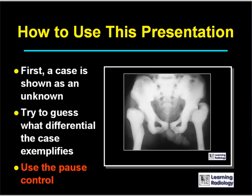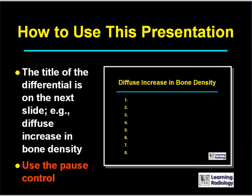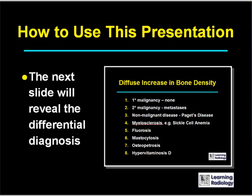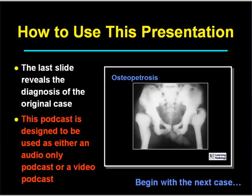The way this presentation will work is: first, the case is shown as an unknown. Try to guess what differential the case exemplifies using the pause control on your computer or MP3 player. The second slide will have the title of the differential — in this case, diffuse increase in bone density. The next slide reveals the differential diagnosis, and the last slide reveals the diagnosis of the original case. This podcast is designed to be used as either an audio-only or a video-only podcast, or both.